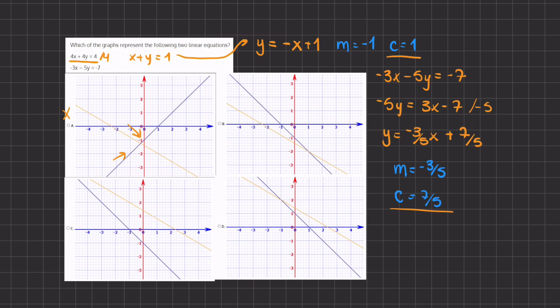So if we are looking for an intercept at 1, graph D is the only graph that has an intersection point at positive 1, and right over here at 7 fifths. So D will be the only correct answer because all of the other graphs do not have an intercept point at positive 1. So D will be our final answer. Thank you!